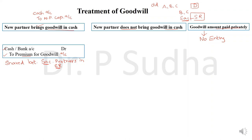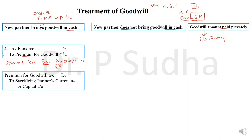I have already uploaded a video on how to calculate the sacrificing ratio — do watch that video. The goodwill premium will be shared between the sacrificing partners in the sacrificing ratio. The entry is: premium for goodwill account debit to sacrificing partners' current account or capital account. Whether it is fixed capital or fluctuating capital will decide if we credit the current account or capital account. These are the two important entries when the new partner brings goodwill in cash.